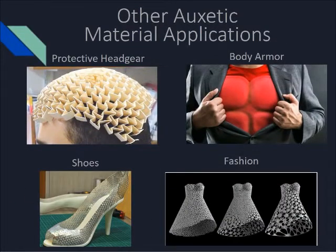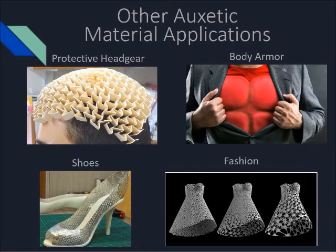Other applications of auxetic materials include protective headgear and body armor. These applications are useful for shock absorption and dispersion of energy throughout the structure. Some novel applications include shoes to get interesting sparkles from the way the light hits the material, and dresses because of the way the material contracts and expands as someone's walking.